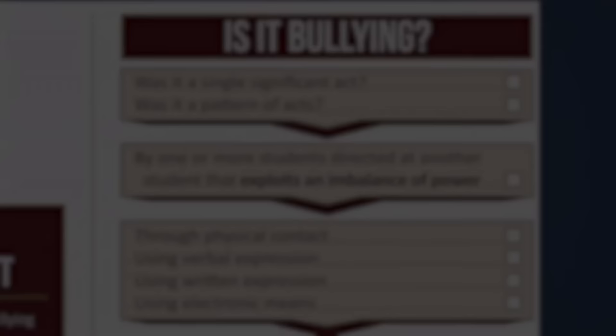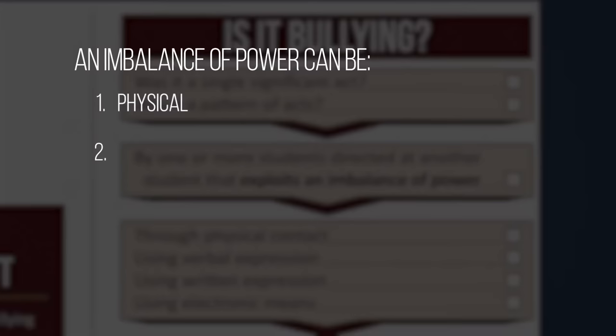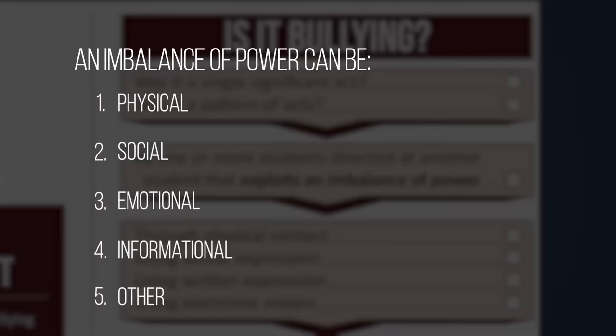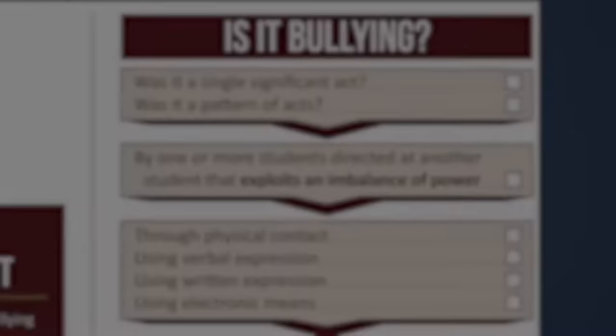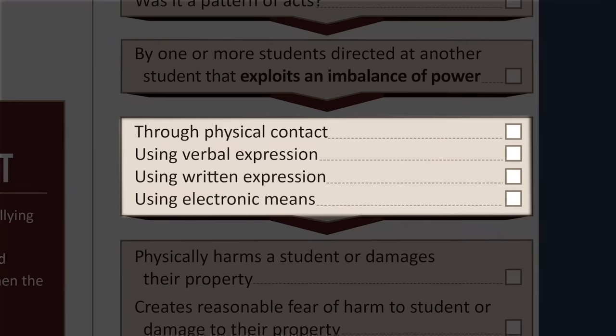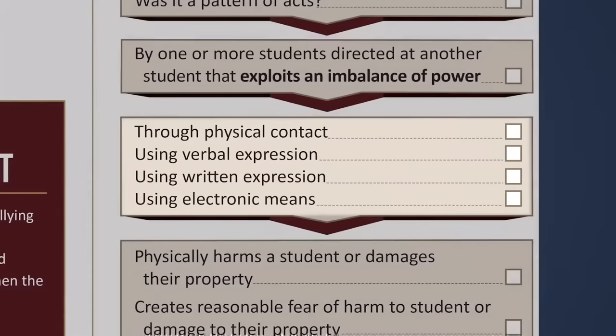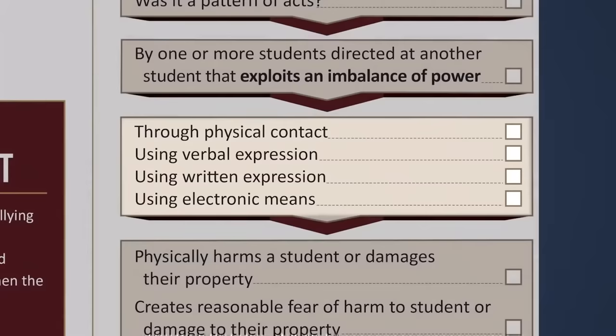The significance of this determination is that the acts must be student versus student and the actions must be directed at an individual student. An imbalance of power is a subjective determination and can include physical, social, or emotional threats to a student's well-being. Power imbalances can change over time and in different situations, even if they involve the same students. The bullying must be done by written, verbal, physical, or electronic means. If bullying is being expressed through electronic means, it may fall under the definition of cyberbullying if it involves any sort of electronic communication.